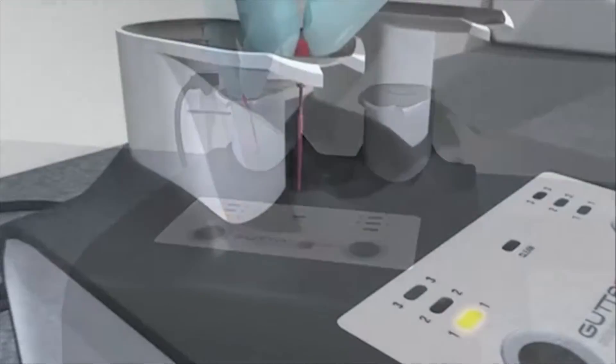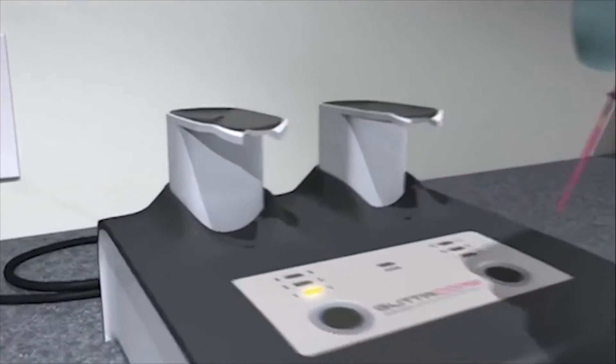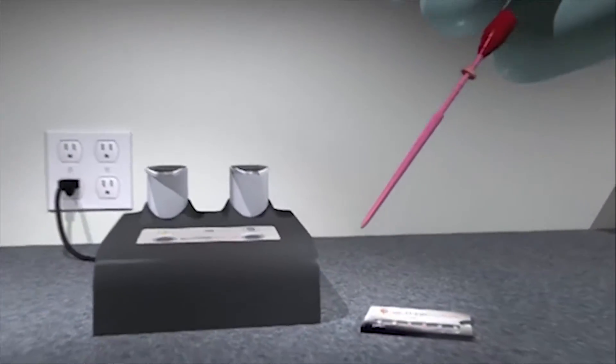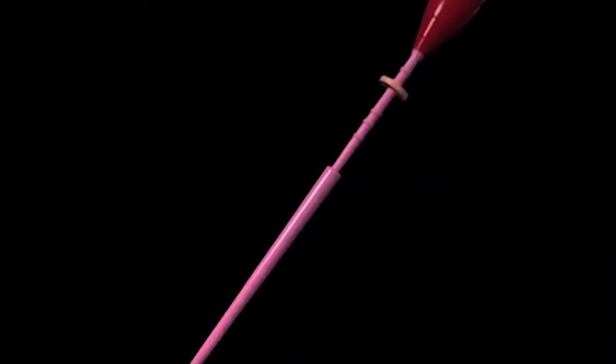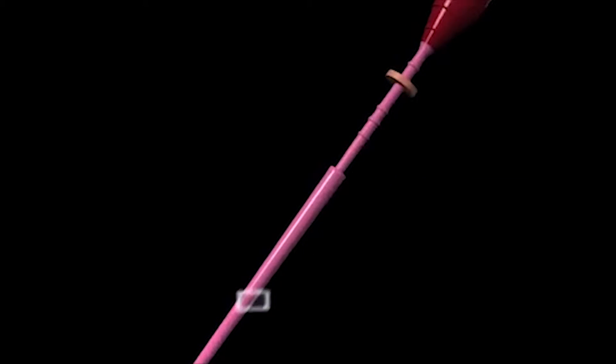GuttaCore obturators are coated with the same flowable alpha-phase gutta-percha that's provided predictable fills for more than 20 years. But GuttaCore is changing obturation from the inside out.